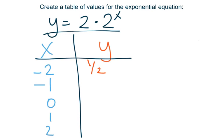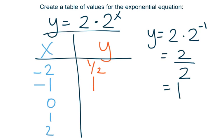What about when x equals -1? Let's plug that in. y = 2·2^(-1), and that gives us 2 over 2, which equals 1. So y equals 1 when x equals -1.